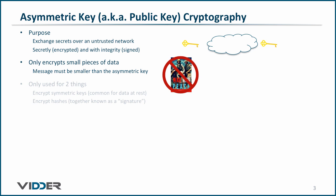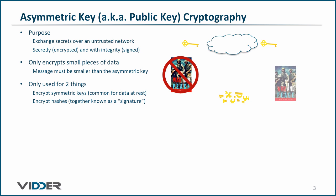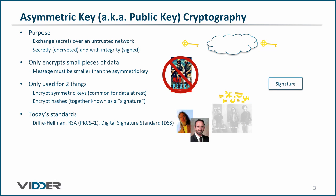Therefore, in practice, asymmetric key encryption is used for only two things: encrypting symmetric keys, which we talked about previously, and encrypting hashes, which we will talk about on the next slide. There are three asymmetric key encryption standards commonly used today: Diffie-Hellman, RSA, and the Digital Signature Standard. We'll see these used in more detail in later videos.